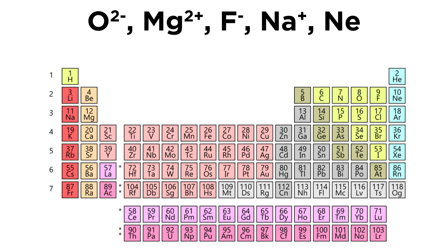Now let's talk about ionic radius. Here we have some ions. We've got oxygen, we've got magnesium, we've got fluorine, we've got sodium, and we have neon.